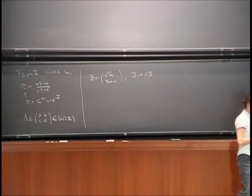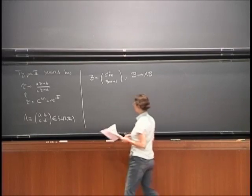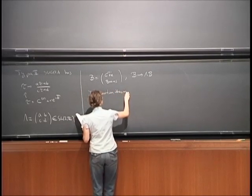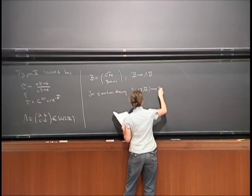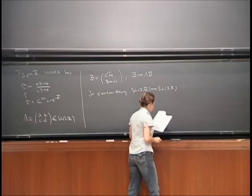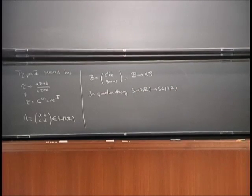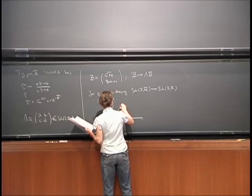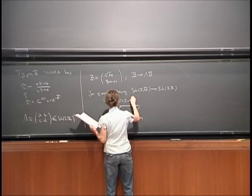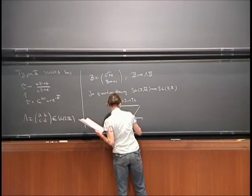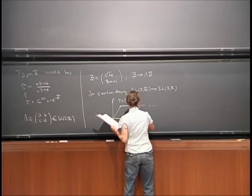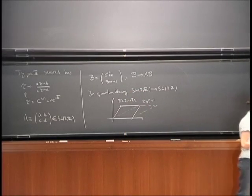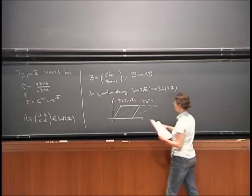In a quantum theory, this SL(2,R) symmetry is broken to SL(2,Z) by charge quantization. We have all seen SL(2,Z) before — it is the group of modular transformations on a torus. If we have a torus parameterized by τ = τ₁ + iτ₂, we obtain the same torus under τ → τ + 1, which is an SL(2,Z) transformation, identifying opposite sides.